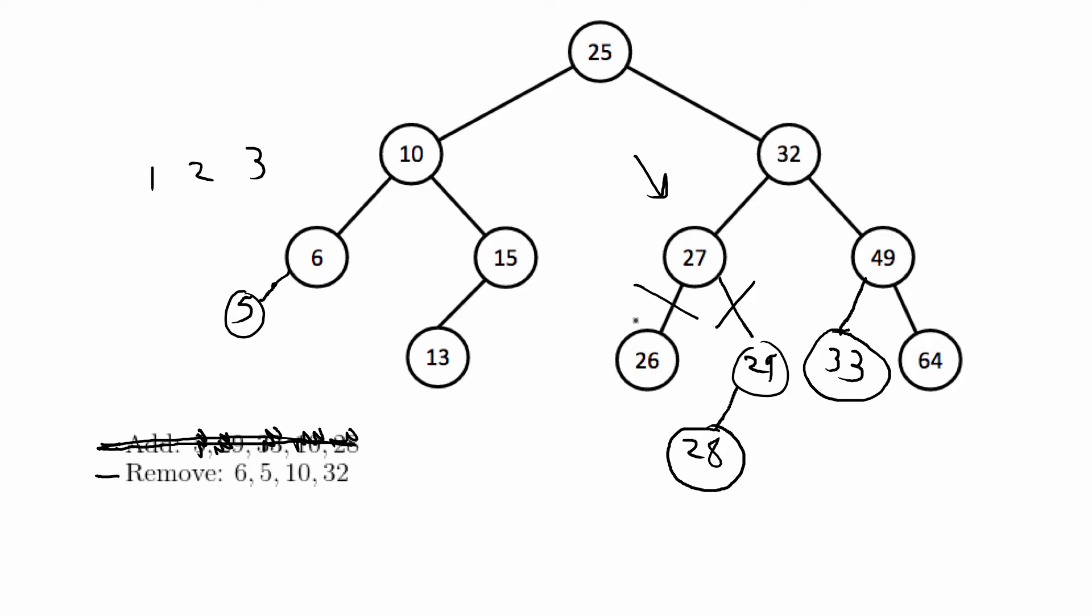So the largest value in the left subtree will always be less than the right subtree and the smallest value on the right subtree will always be larger than any value in the left subtree. That's kind of the idea with that and we'll do these three examples to show you what I mean.